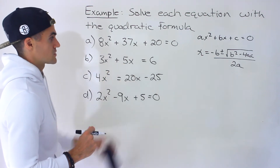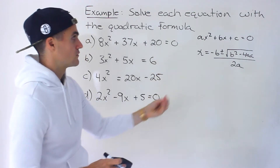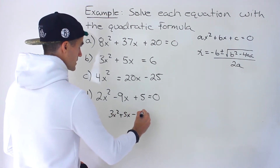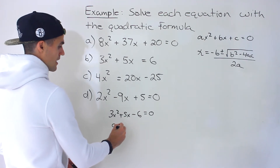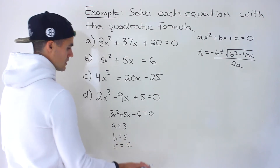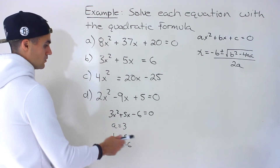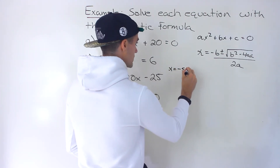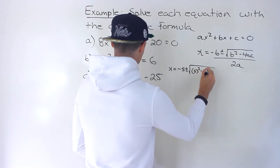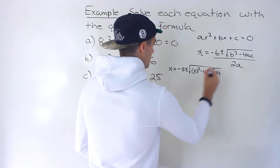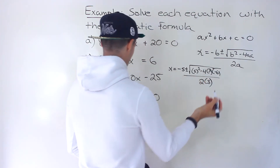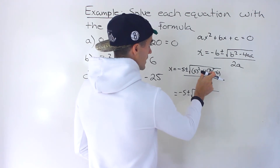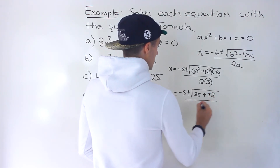We got 3x squared plus 5x equals 6. Remember, for a quadratic equation you want everything on one side so you have zero on the other. So I'm bringing the 6 over — we'd end up with 3x squared plus 5x minus 6 equals zero. So the a value is 3, the b value is 5, the c value is negative 6. Plugging these into the quadratic formula, we'll have negative 5 plus or minus the square root of 5 squared minus 4 times 3 times negative 6, all over 2 times 3. That gives us negative 5 plus or minus the square root of 25 plus 72, all over 6.